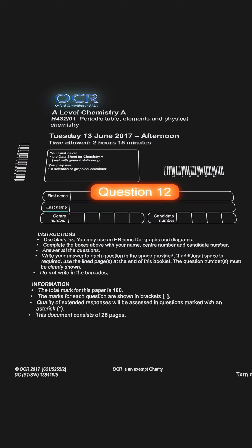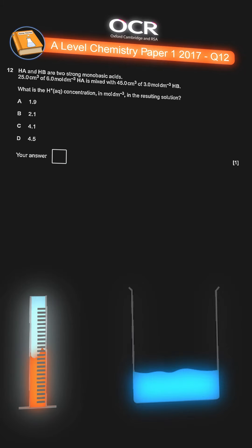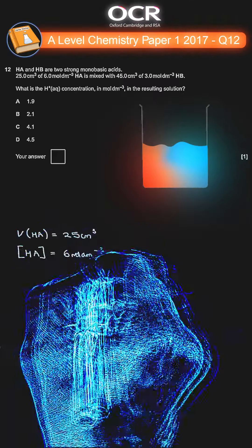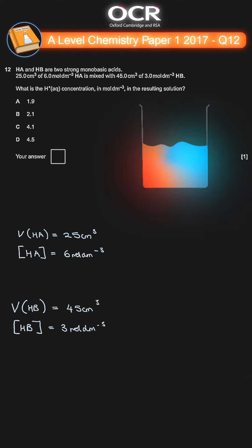A Level OCR Chemistry Paper 1, 2017, question 12. HA and HB are two strong monobasic acids. 25 centimetres cubed of 6 moles per dm cubed HA is mixed with 45 centimetres cubed of 3 moles per dm cubed HB. What is the H plus concentration in moles per dm cubed in the resulting solution?